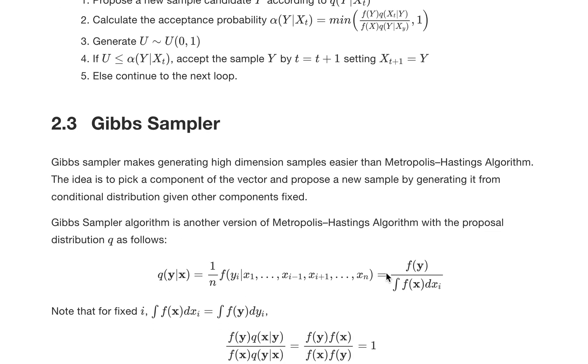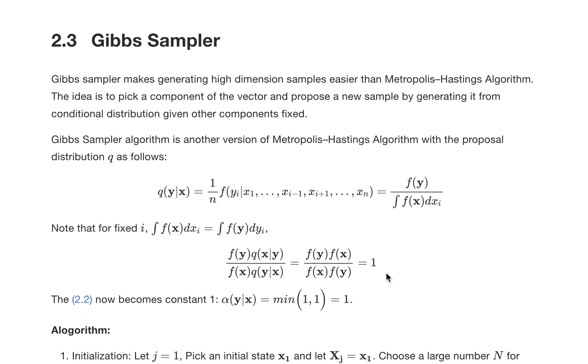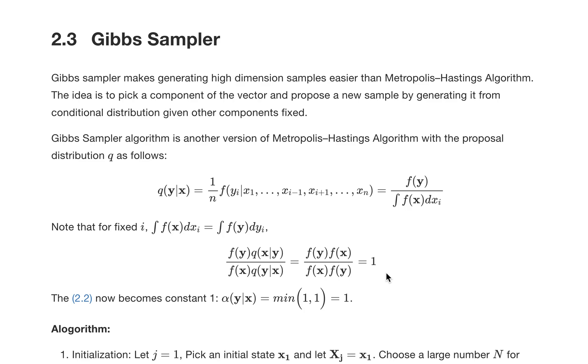Comparing to the Metropolis-Hastings algorithm, Gibbs Sampler has a big advantage when we need to generate samples from high-dimensional random variables, and it's also much simpler than the Metropolis-Hastings algorithm.